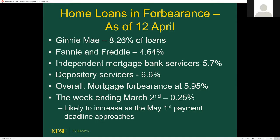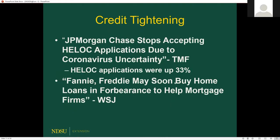Forbearance will likely increase as the May 1st payment deadline approaches, since most mortgages are paid on the first of the month. On credit tightening: JPMorgan Chase has stopped accepting HELOC applications — home equity lines of credit. Before this, HELOC applications were up about 33%. Fannie and Freddie are government backed since the financial crisis and can buy up some of these loans.